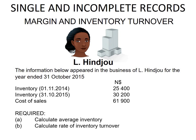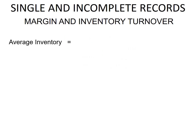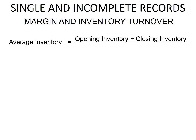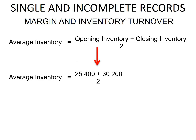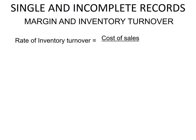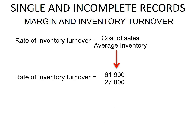What's required is to calculate the average inventory and the rate of inventory turnover. To calculate the average inventory, take the opening inventory plus the closing inventory and divide by 2. So 25,400 plus 30,200 divided by 2 gives us an average stock of 27,800. The rate of inventory turnover is cost of sales divided by average inventory: 61,900 divided by 27,800 gives a stock turnover of 2.2 times.